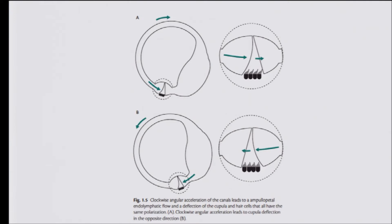Just by looking at the eye movement — the slow phase or fast phase, the plane in which the eye is moving — can we deduce which semicircular canal is eliciting that response? Yes. You can look at the direction of eye movement and plane of eye movement: this eye movement relates to this semicircular canal, this other eye movement relates to another semicircular canal, and this eye movement is a combination of two semicircular canals. Dr. Shithij is going to talk in detail about that.